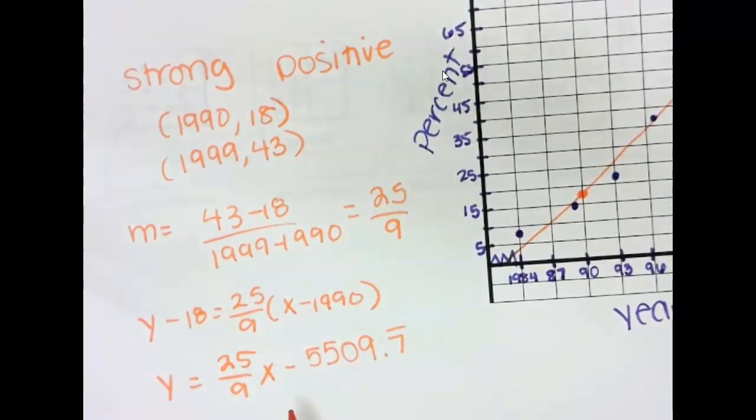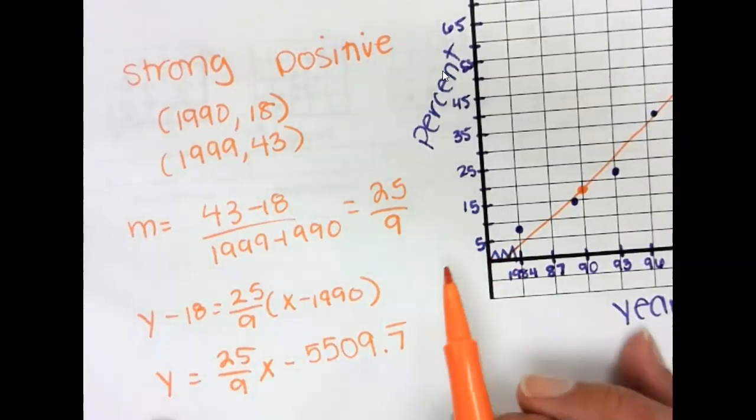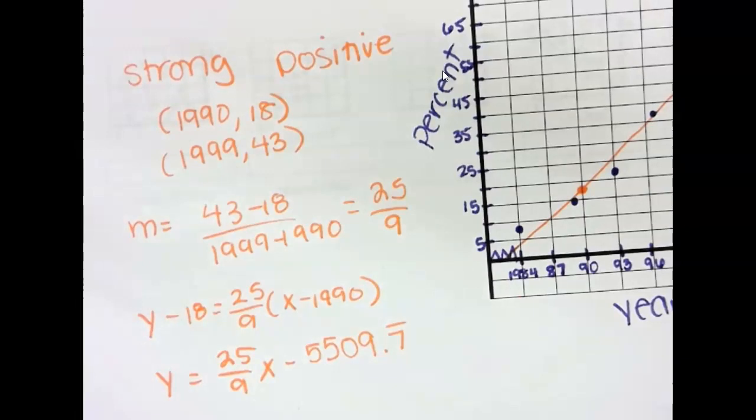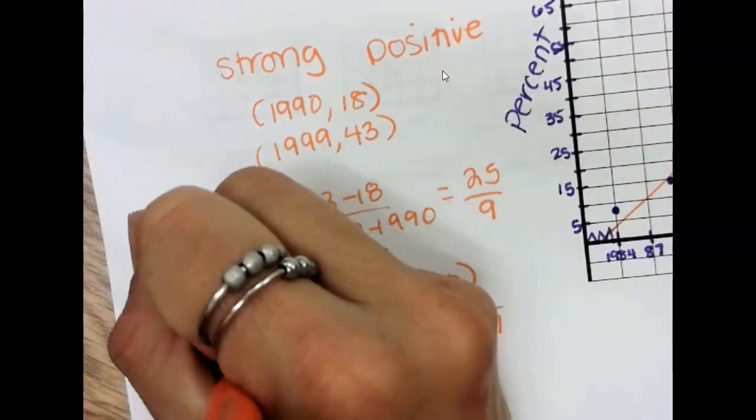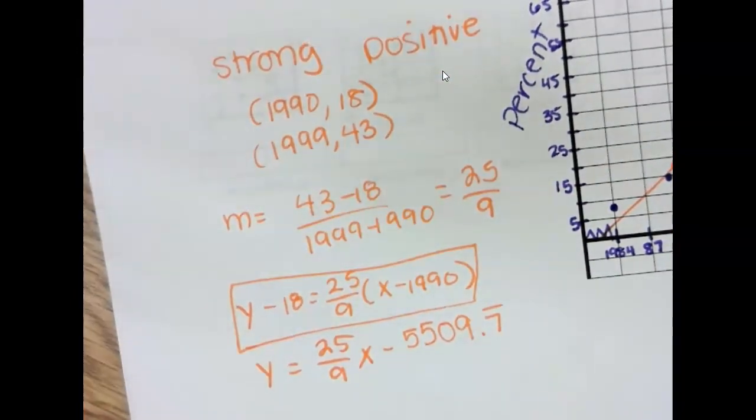And it should make sense that my y-intercept is such an awkward negative number. Because it's coming from the negatives when computer households didn't exist. So, honestly, this is the case where leaving an equation in point-slope form is much more useful.